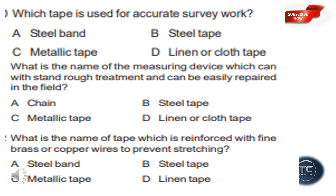What is the name of the measuring device which can withstand rough treatment and can be easily repaired in the field? The options are chain, steel tape, metallic tape, and linen or cloth tape. The answer is chain.